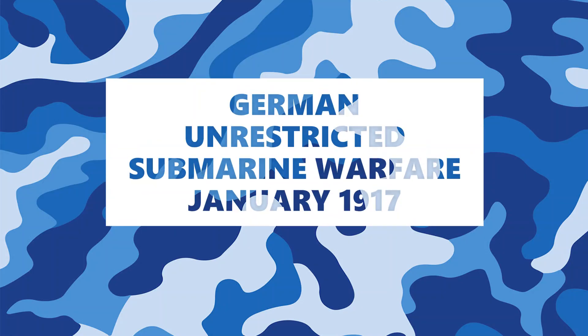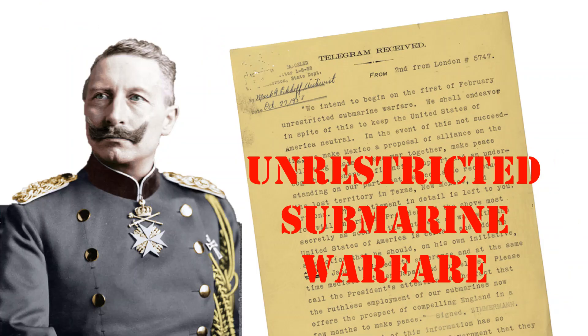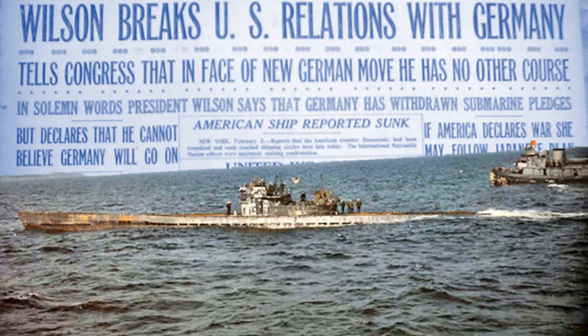German unrestricted submarine warfare, January 1917. The British blockade had worsened economic conditions in Germany. Germans were desperate and suffering from the lack of food and supplies. In January 1917, Germany officially declared that it would sink all ships, neutral or allied, traveling to Britain. German leaders knew that this measure would probably bring the United States into war, but assumed that France and Britain would already have been defeated by the time the U.S. could effectively intervene.